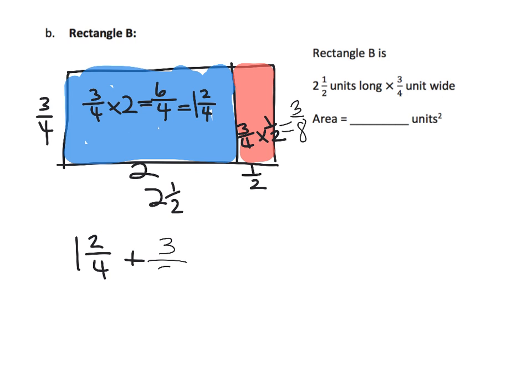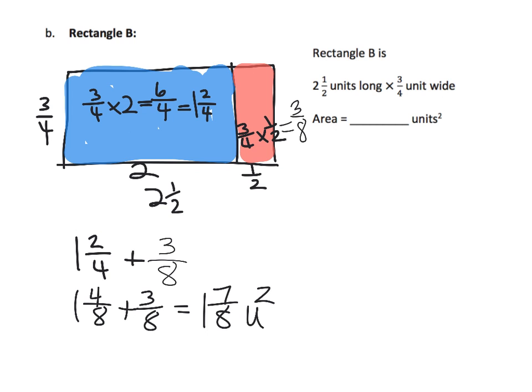Adding the partial products with common denominators: rename two-fourths as four-eighths, so we get one and four-eighths plus three-eighths, which gives one and seven-eighths square units. That's our answer: one and seven-eighths square units.